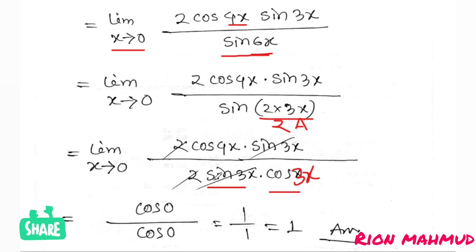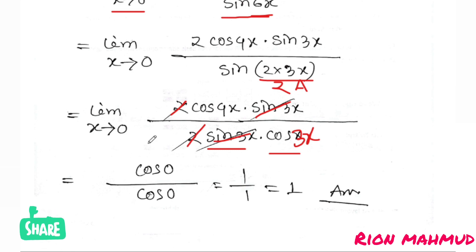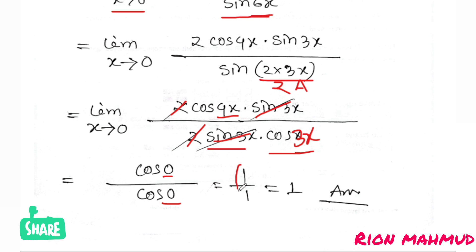Taking the limit as x tends to 0: cos(4×0) divided by cos(3×0) equals cos0 over cos0 equals 1 over 1 equals 1. So the answer is 1.